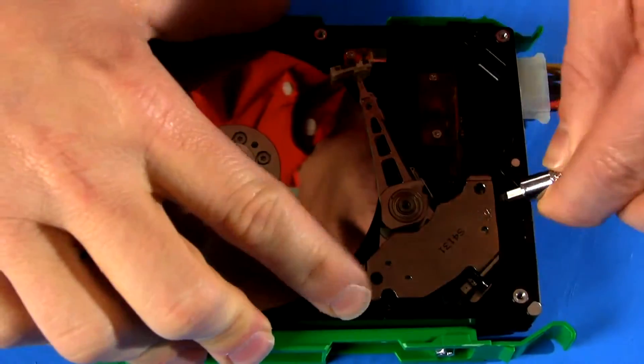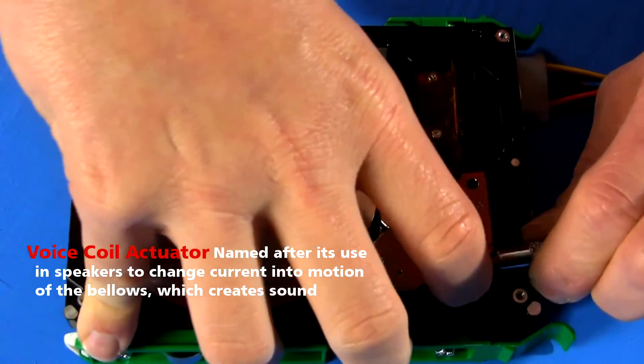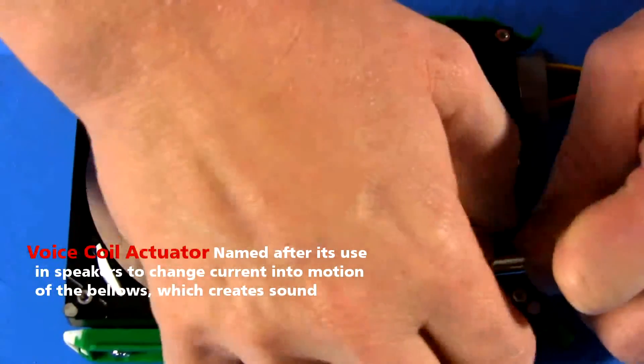To position the arm, engineers use a voice coil actuator. The base of the arm sits between two powerful magnets—they're so strong they're actually kind of hard to pull apart—there.